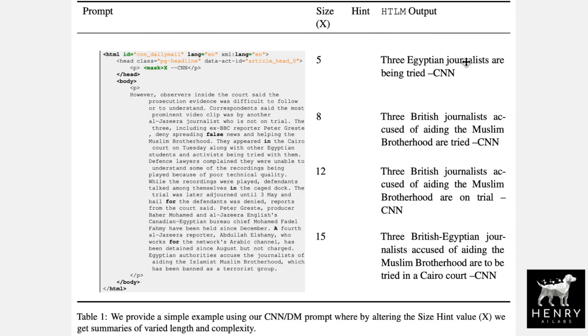At size five, we get 'Three Egyptian journalists are being tried.' At size eight, a different wording. Then at 12 and 15, further variations. This shows how size prompts result in different generations for the task of zero-shot summarization.